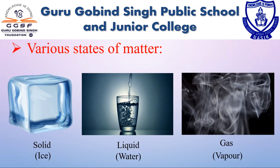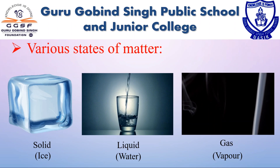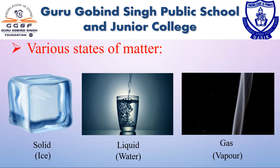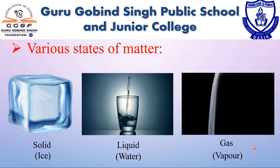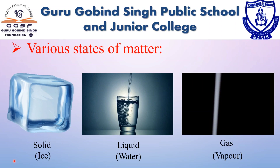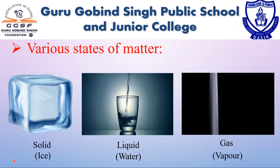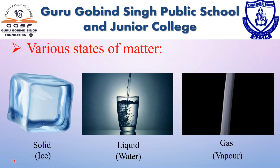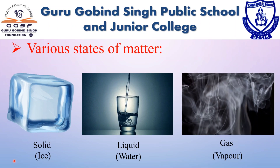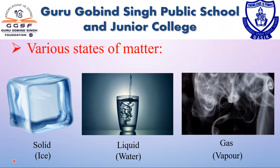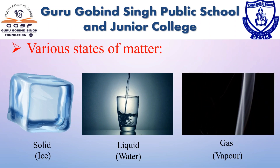Let's begin with the first module: various states of matter. All the materials we see in our daily lives — from ice cream to chairs to water — are made up of matter. Matter can be classified into three different states: solid, liquid, and gas. On the basis of intermolecular forces and the arrangement of particles, these three forms of matter can be converted from one state to another by changing environmental factors such as increasing or decreasing pressure and temperature. For instance, ice can be converted from solid into liquid water by increasing the temperature.